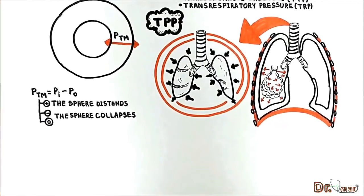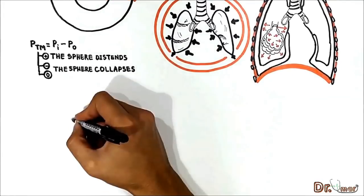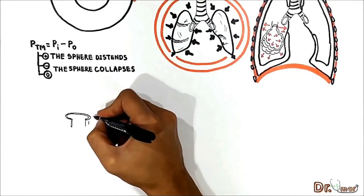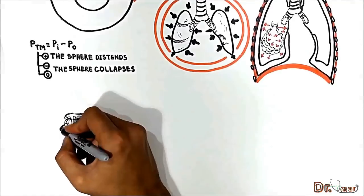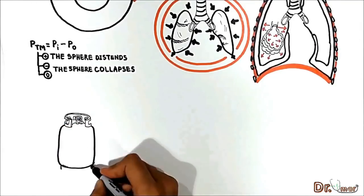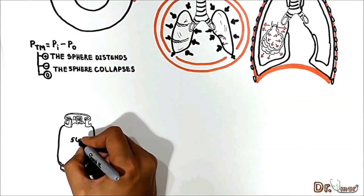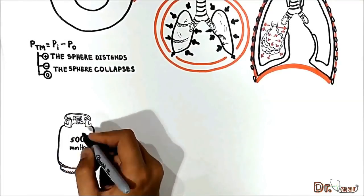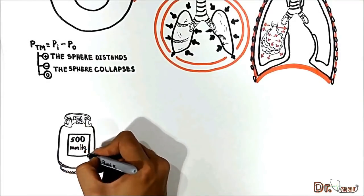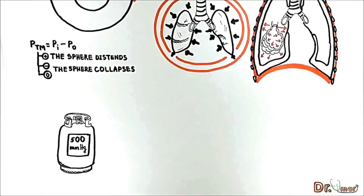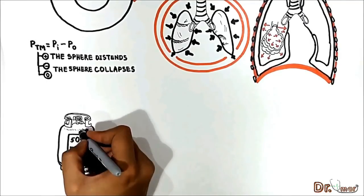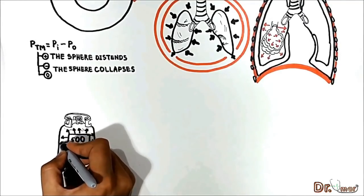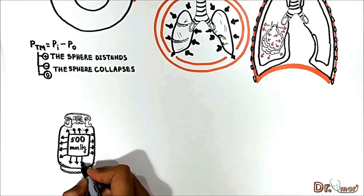To understand how this pressure acts on the lung's wall and holds it open, consider a balloon example. Suppose the balloon has a gas pressure of 500 mmHg inside. In this case, 500 mmHg pressure within the balloon pushes the inner surface of the balloon and tries to distend it. Transpulmonary pressure on the lung system acts somewhat like this.